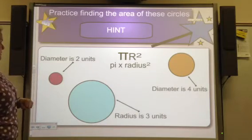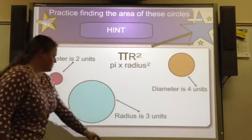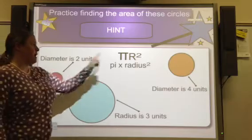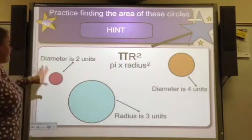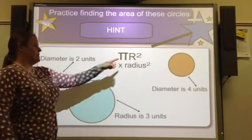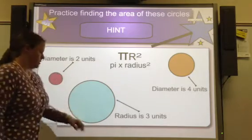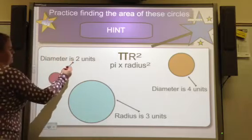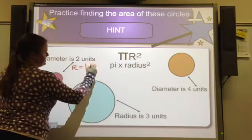So I'm looking at another one. This one has a diameter of 2 units. So again, the pi r squared is the formula. If I'm given that the diameter is 2 units, I know that the radius is half of that. So for this problem, the radius equals 1 unit.